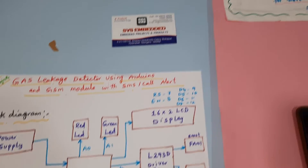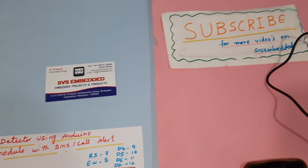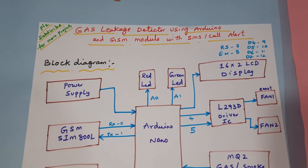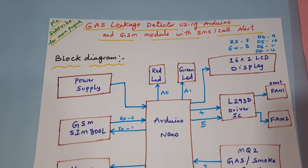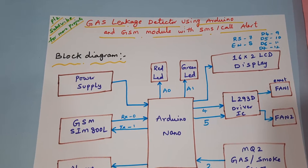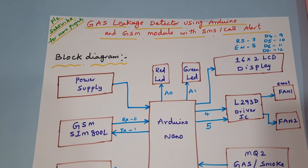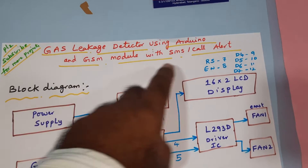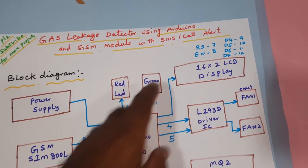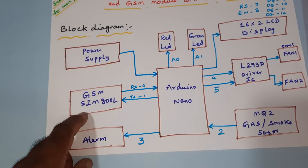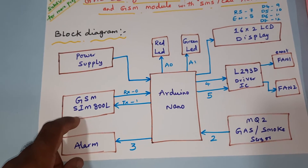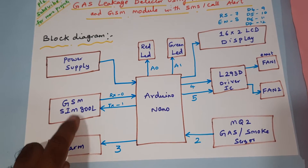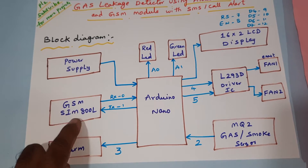Hi, we are from SVS Embedded. The project title is Gas Leakage Detector using Arduino and GSM module SIM800L, with SMS alert and call alert. We are using GSM SIM800L with IDEA, Airtel, and Vodafone SIM cards.